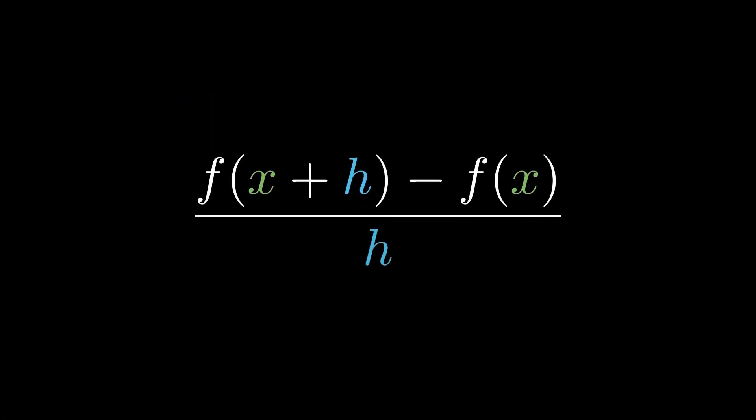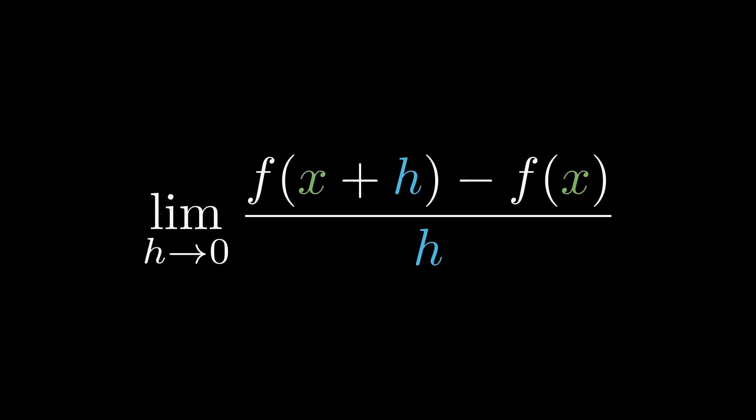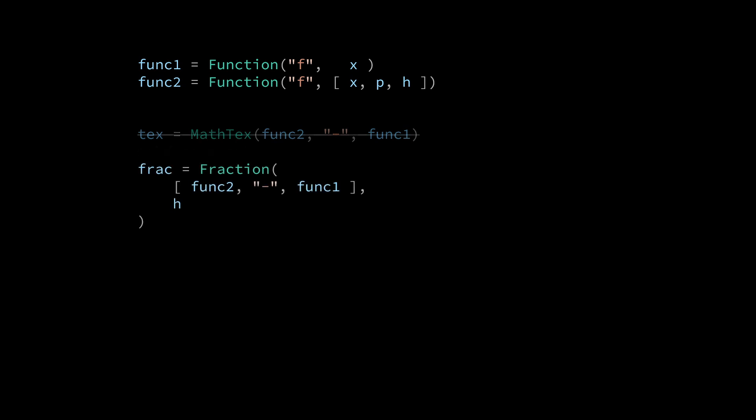We are now ready to construct the full limit derivative expression. We need to place our construction of f of x plus h minus f of x inside the numerator of a fraction component. So, this is how we can construct a fraction in reactive manim. I'm going to delete the current math text, as we can construct the math text directly into the fraction using array brackets. This gives us the fraction component.